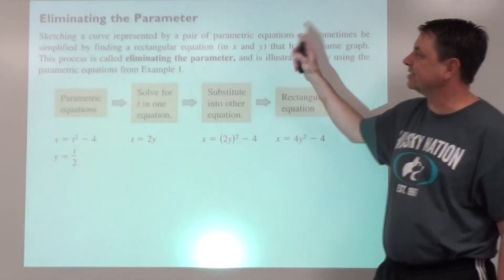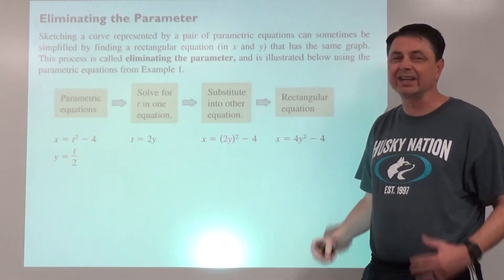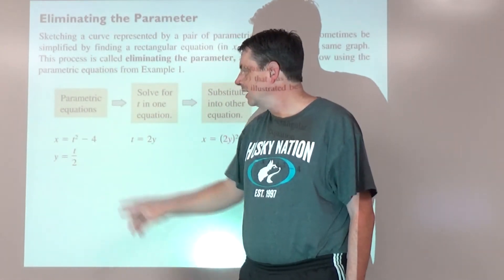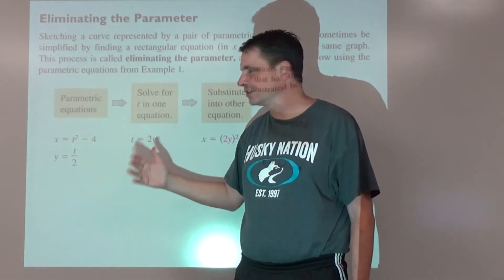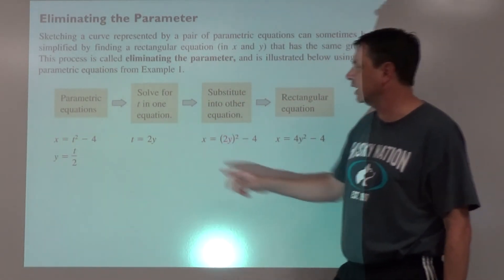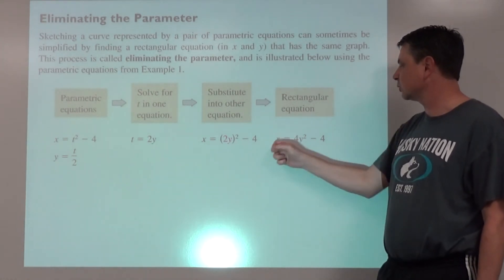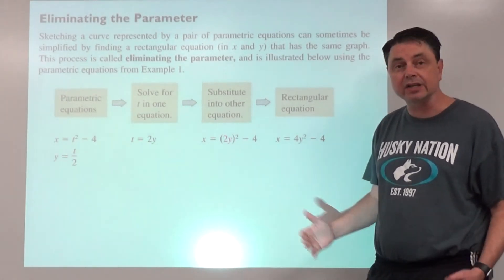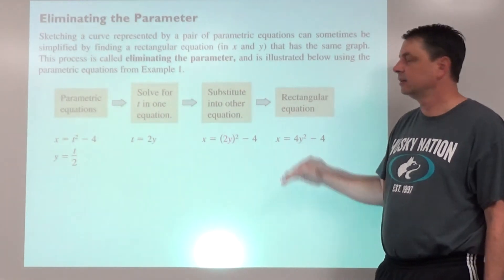Eliminating the parameter means converting parametric equations back into rectangular form — just in terms of x and y. Take one of the two equations and solve for t, choosing whichever is easier. Avoid the equation that would introduce ambiguity with square roots and plus-or-minus. Solve for t, substitute into the other equation, and simplify. You may express the result as a conic section in general form, such as x minus 4y squared plus 4 equals 0.